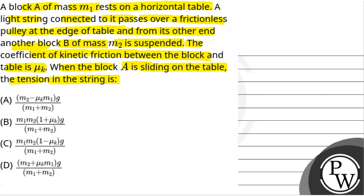We will solve this question. First of all, we will see what the key concept is used to solve this question. The key concept is that frictional force F is equal to mu into N. And in case of motion of the block, kinetic friction will act. So kinetic friction will be equal to the coefficient of kinetic friction, that is mu k, into normal reaction N.